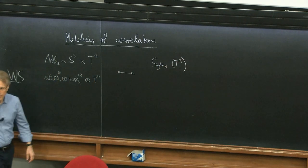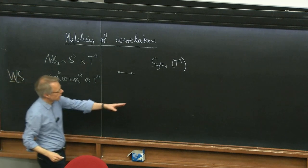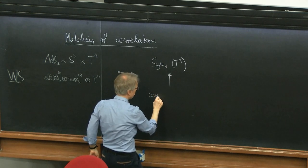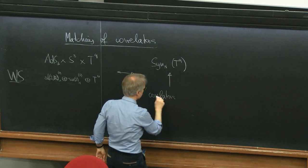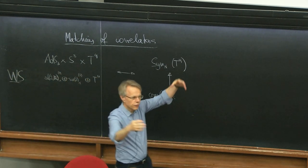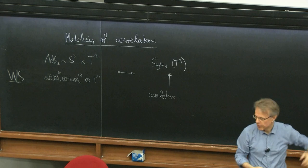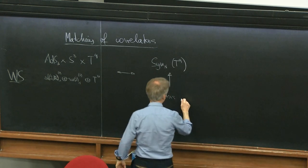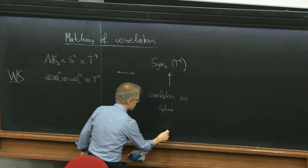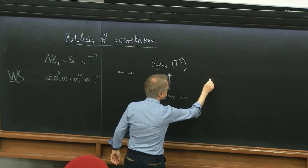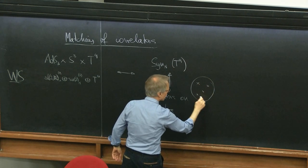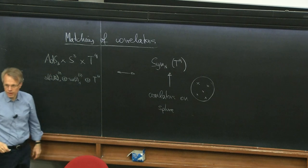The symmetric orbifold of T4 is the CFT, and we want to calculate correlation functions in that theory. The boundary of AdS3 should be thought of as a cylinder; if you compactify it, it becomes a sphere. So these correlators will always live on the sphere — they will be correlators on the sphere, where you insert various points where certain fields from the symmetric orbifold theory sit.